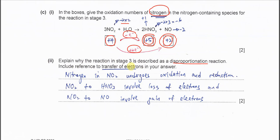So you just need to mention which one is lost, which one is gained. Nitrogen in the NO2 undergoes oxidation and reduction. This is what you need to state.